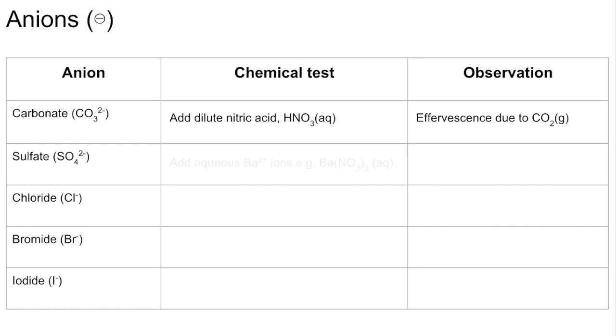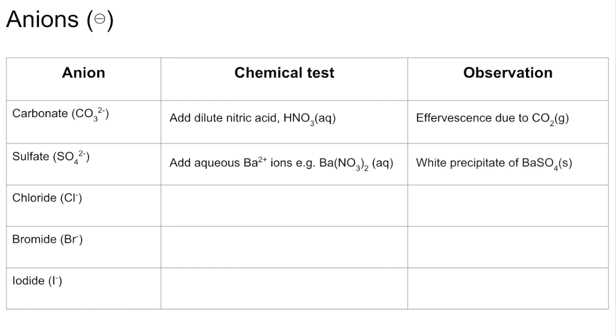Sulphate next: add aqueous barium ions — for example, barium nitrate solution — and you'd expect to see a white precipitate of barium sulphate.